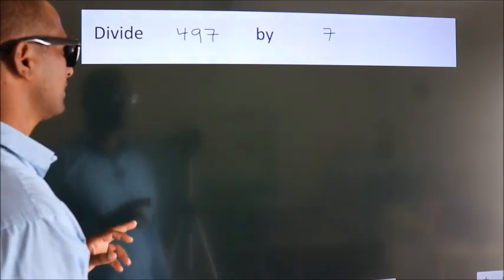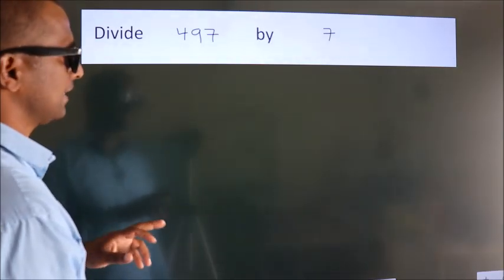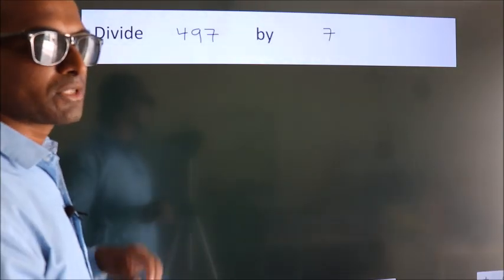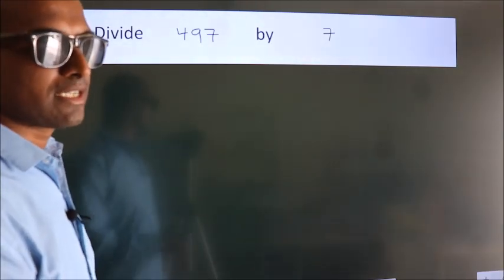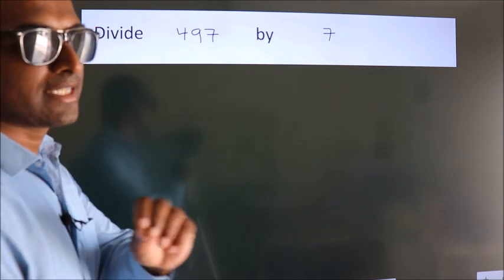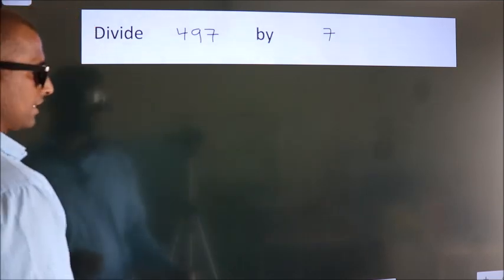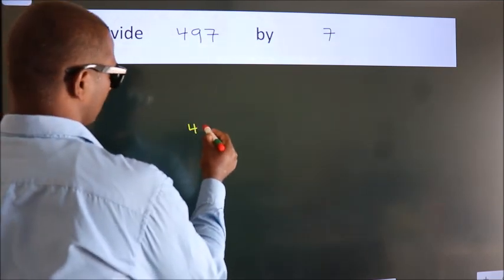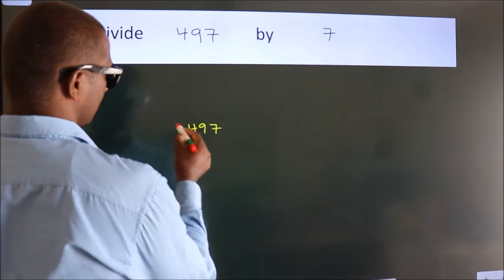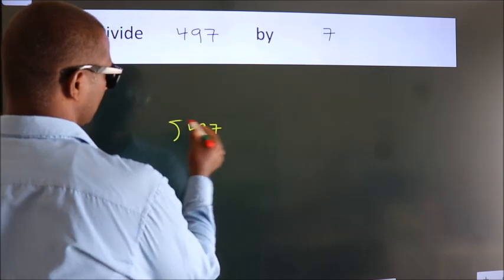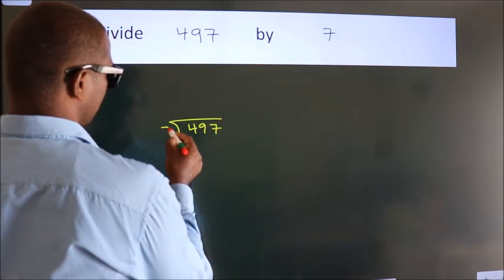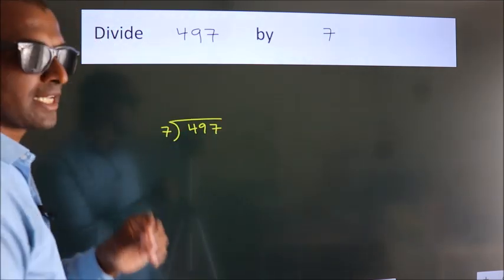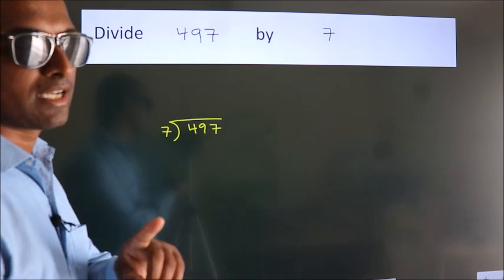Divide 497 by 7. To do this division, we should frame it in this way: 497 here, 7 here. This is your step 1.